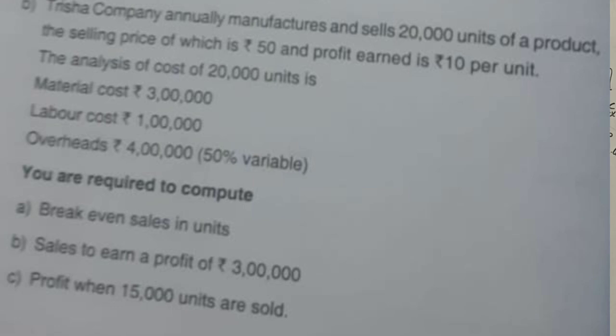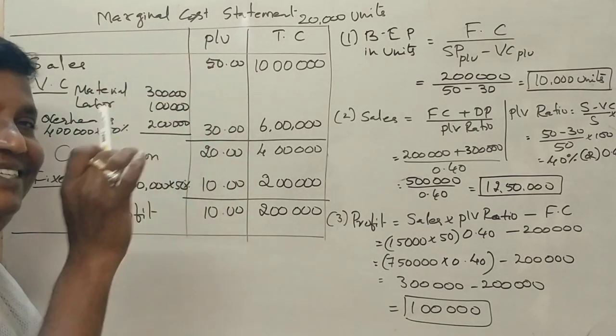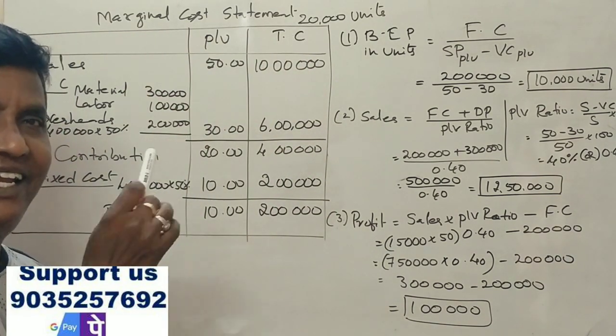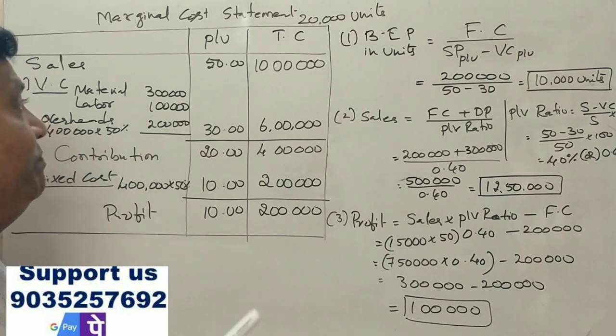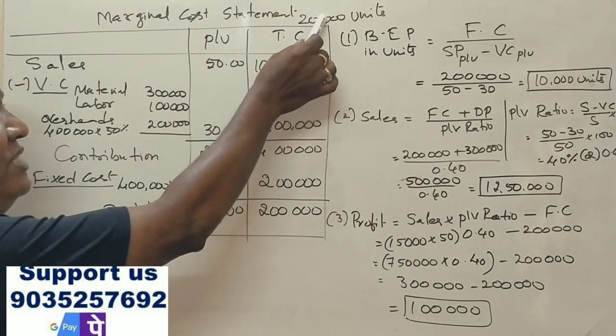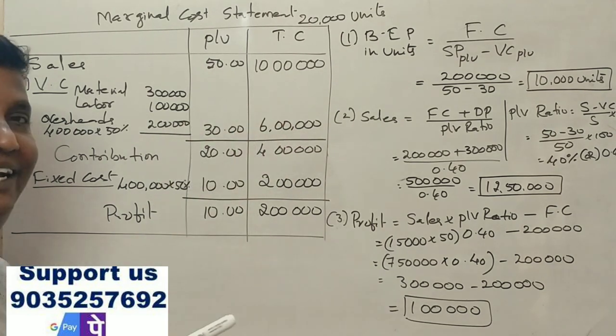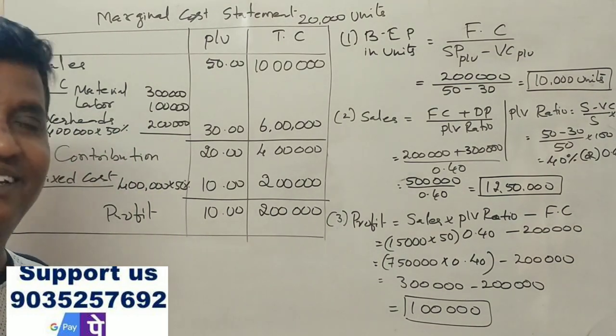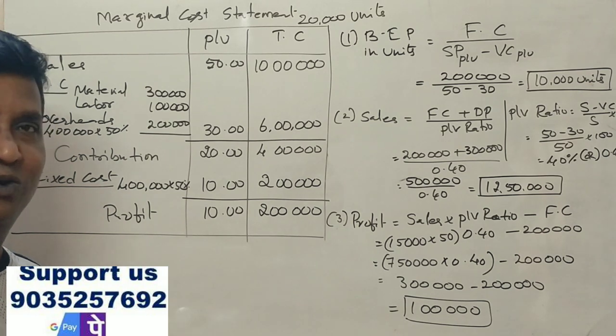First, we need to take a break-even point. Now, if sales are 20,000 units, we have 10 lakh rupees. If we want 15,000 units, how much is the profit? Sales minus variable cost, the material, labor, and overheads. Variable expenses are the key.